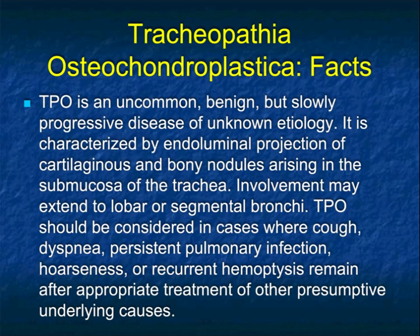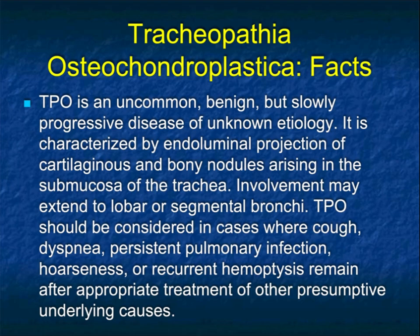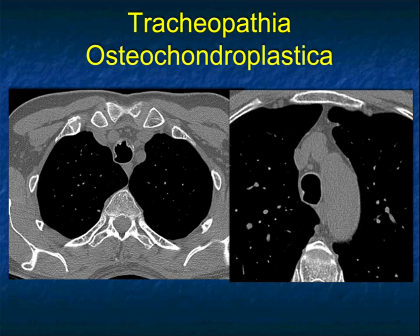Tracheopathia osteochondroplastica — that's a mouthful, so maybe we'll call it TPO. It's an uncommon, benign, but slowly progressive disease of unknown etiology. It's characterized by endoluminal projection of cartilaginous and bony nodules arising in the submucosa of the trachea. Involvement can extend to the lobar or segmental bronchi. It should be considered in cases where cough, dysphonia, persistent infection, hoarseness, or recurrent hemoptysis remain after appropriate treatment of other diagnoses.